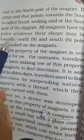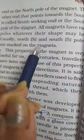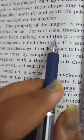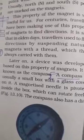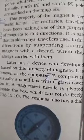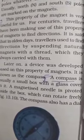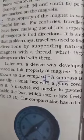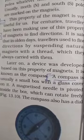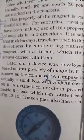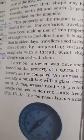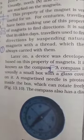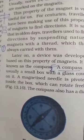All magnets have two poles, whatever their shape may be, which are north and the south pole. This property of magnet is very useful for us. For centuries, travelers have been making use of this property of magnets to find direction. It is said that in olden days travelers used to find direction by suspending natural magnets with a thread, which they always carried with them.